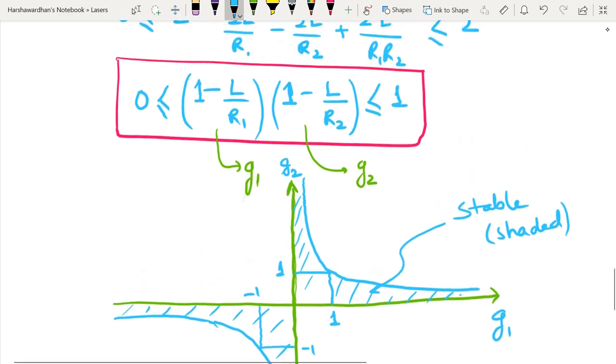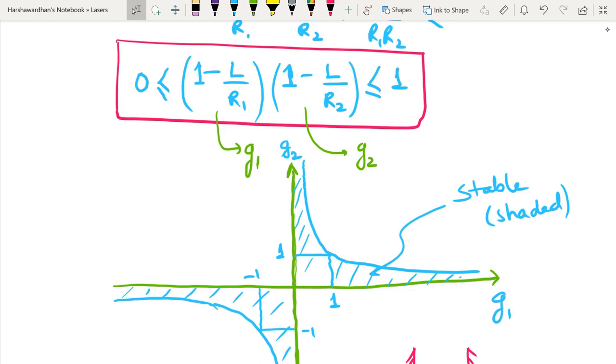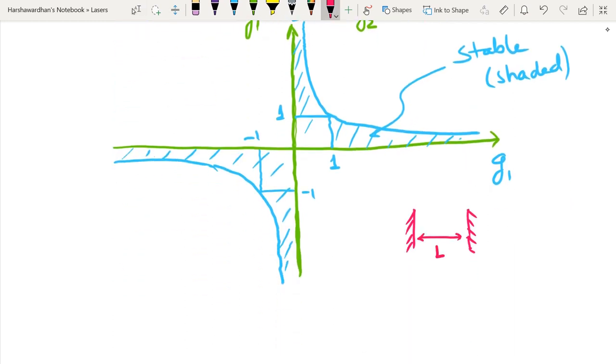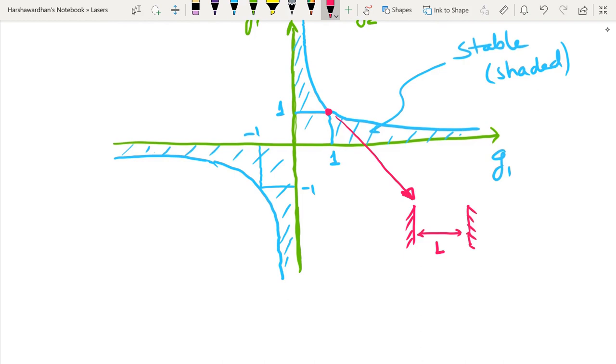So now let's just look at, for example, if I use two plane mirrors. So we will do this one by one. Let's look at few examples. Two plane mirrors. If I have two plane mirrors, what would be the radius of curvature of each of them? That would be infinity. So you see that what I have is, irrespective of the radius of curvature and any length L, it doesn't matter, but I will basically stay on this point 1, 1. This is the location of the planar mirror cavity. And clearly we see that such a cavity is on the border of being stable and unstable. Any small disturbance can actually make this cavity unstable. So this cavity such a choice of parameters for a cavity makes it critically stable. It is at the boundary of stable and unstable.